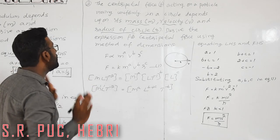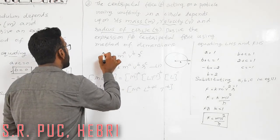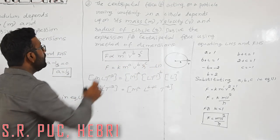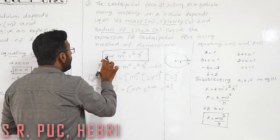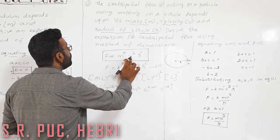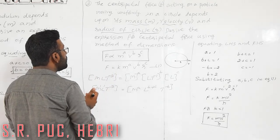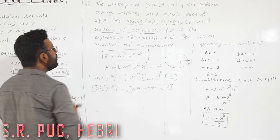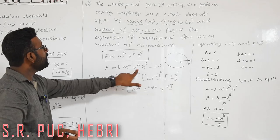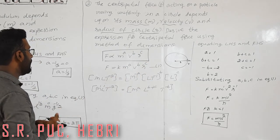Listen carefully and try to solve it yourself rather than just copying from the board. We write F ∝ mᵃ vᵇ rᶜ. Replacing proportionality with a constant k: F = k mᵃ vᵇ rᶜ — this is equation 1.